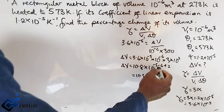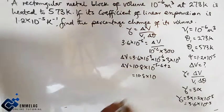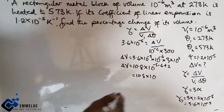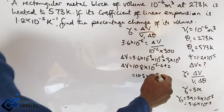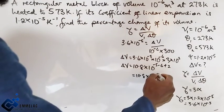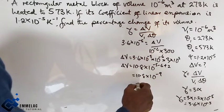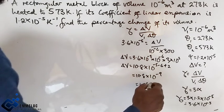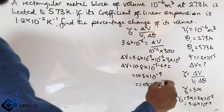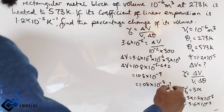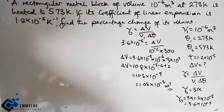So we have 10.8×10^(-11+2), which gives us -9 in the exponent. This gives us 1.08×10^-8 m³. Now that we've gotten the change in volume, let us look for the percentage.